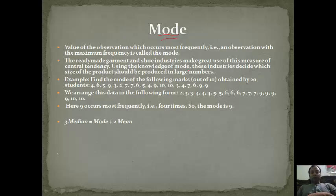Suppose a series is given: 2, 2, 2, 3, 3, 4, 4, 4, 4, 5, 5, 6, 6, 7, 7, 7, 9, 9, 9, 10. Here 9 occurs 4 times, so the mode is 9. It's simple.